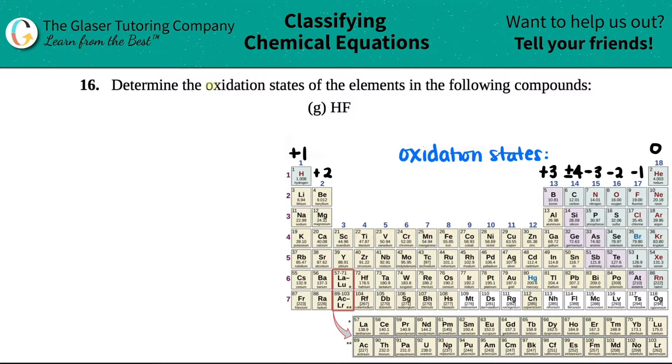Number 16: Determine the oxidation states of the elements in the following compounds, and then we have letter g. We need to find out the oxidation states of hydrogen and fluorine in hydrogen fluoride or hydrofluoric acid.